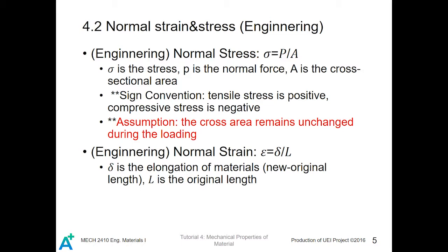And yes, there is an assumption as I just mentioned. The cross-area is constant during the loading. Normal strain is defined as delta over L. Delta is the elongation of material, which is L minus the original length. And L is the original length.